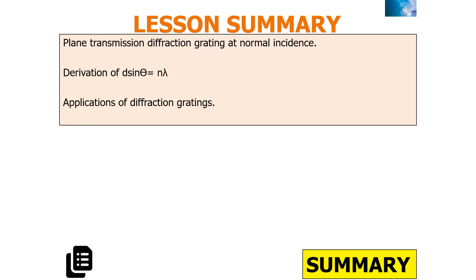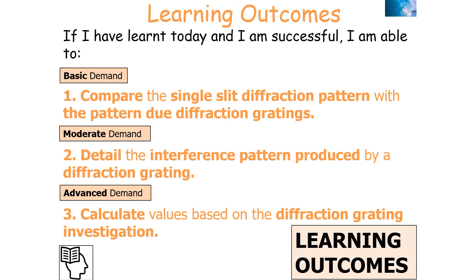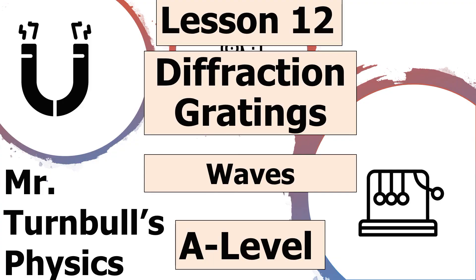To summarise today's lesson, we should be able to understand the plane transmission diffraction grating at normal incidence, understand the derivation of D sin theta equals N lambda, and know the applications of diffraction gratings. You should be able to compare the single-slit diffraction pattern with the pattern due to diffraction gratings, detail the interference pattern produced, and calculate values based on the diffraction grating investigation. Thank you very much for watching this lesson on diffraction gratings, part of the Waves topic in AQA A-level physics.